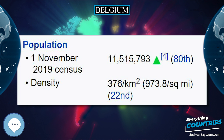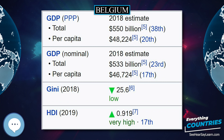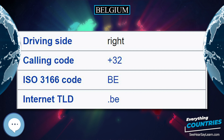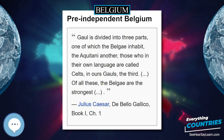Its institutional organization is complex and is structured on both regional and linguistic grounds. It is divided into three highly autonomous regions: Flanders in the north, Wallonia in the south, and the Brussels capital region. Brussels is the smallest and most densely populated region, as well as the richest region in terms of GDP per capita.